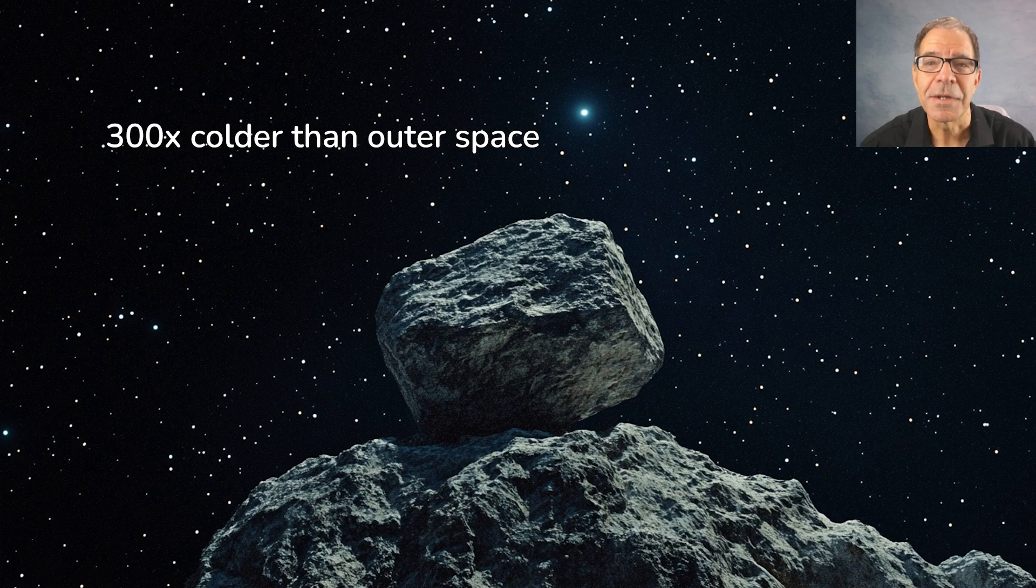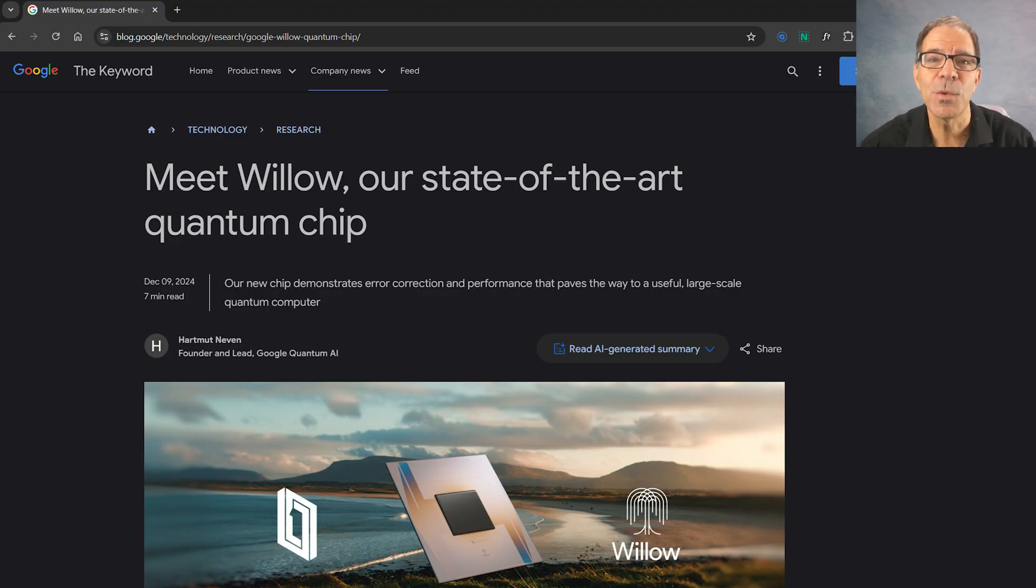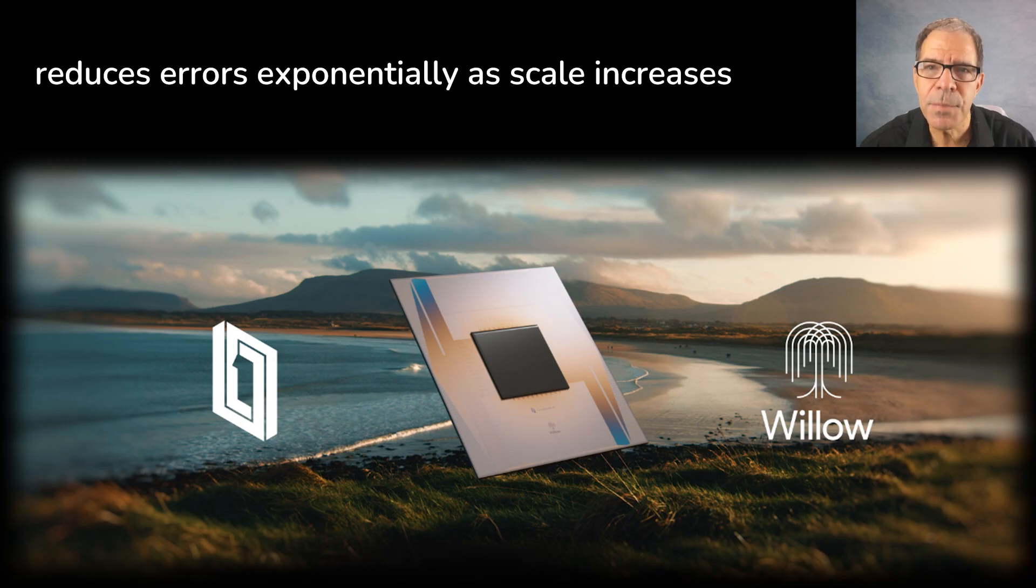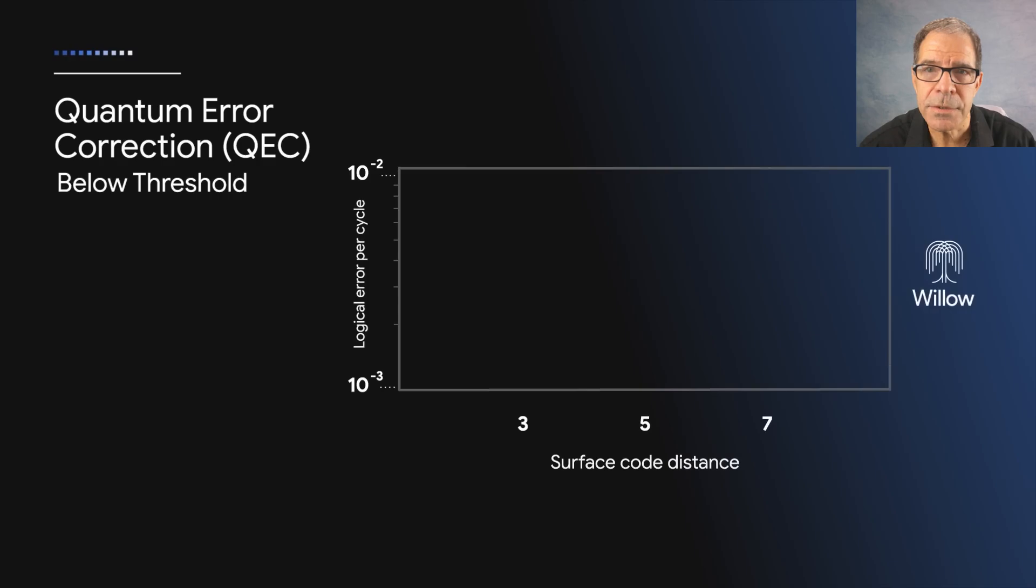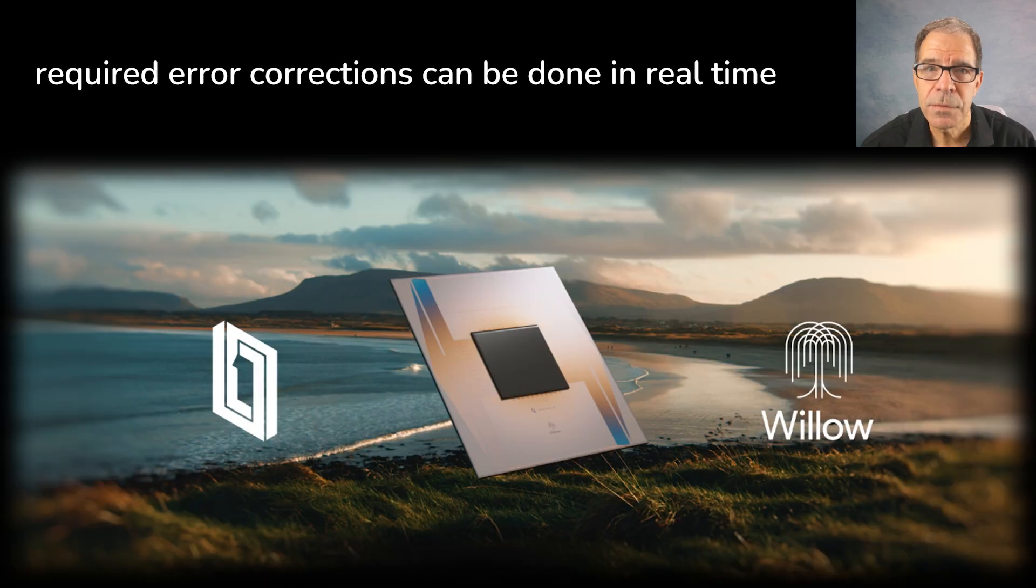With that as context, let's return again to this week's announcement. One of the most important factors is that Willow has now demonstrated an approach to quantum error correction that reduces errors exponentially as the scale increases. With Willow, error rates are cut in half each time the grid is increased in size to the next scaling factor. That's the opposite of what happened in the past. Also, tests show that any required error corrections can all be done in real time.